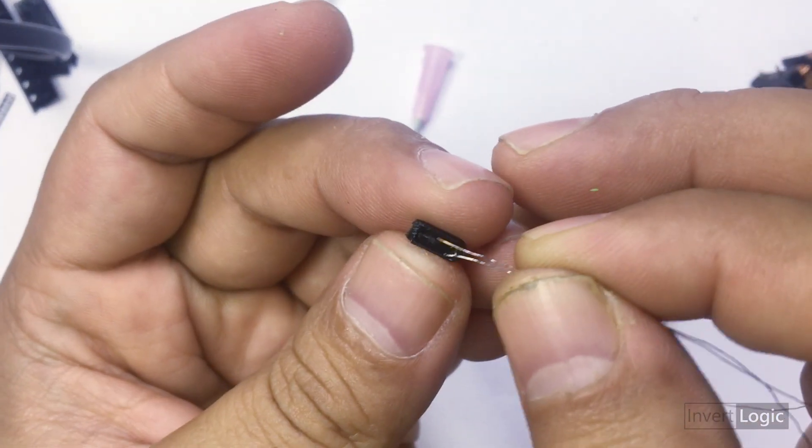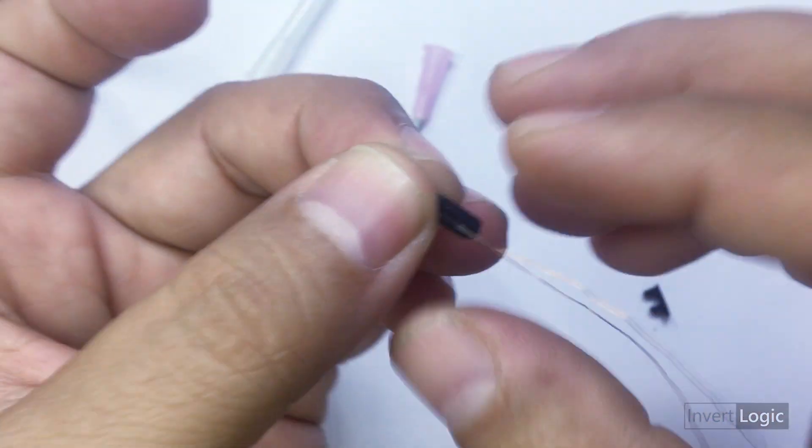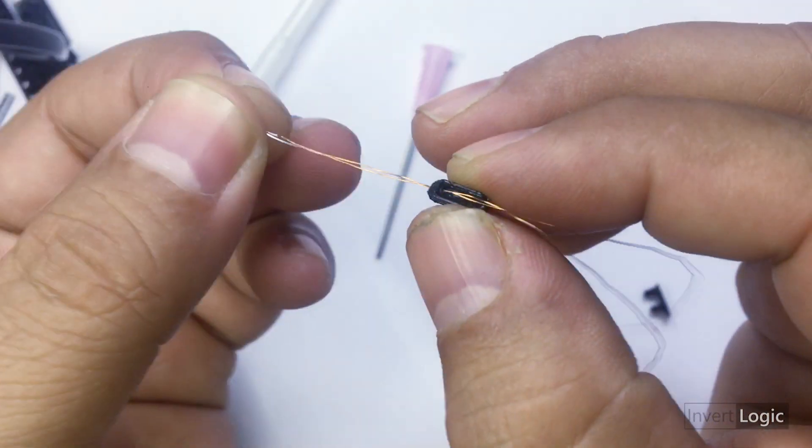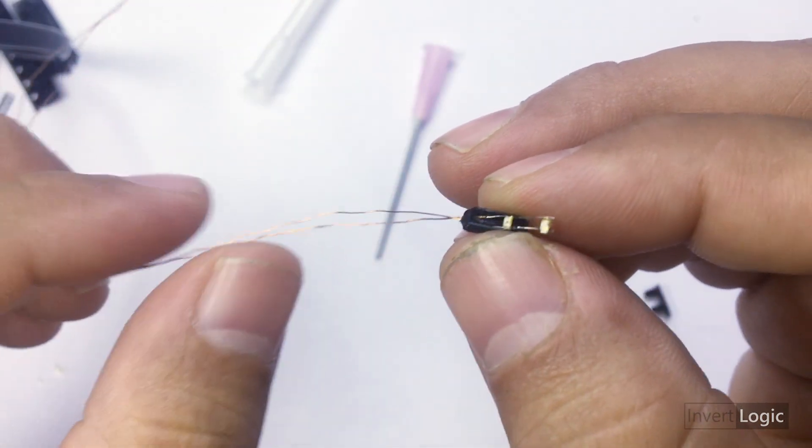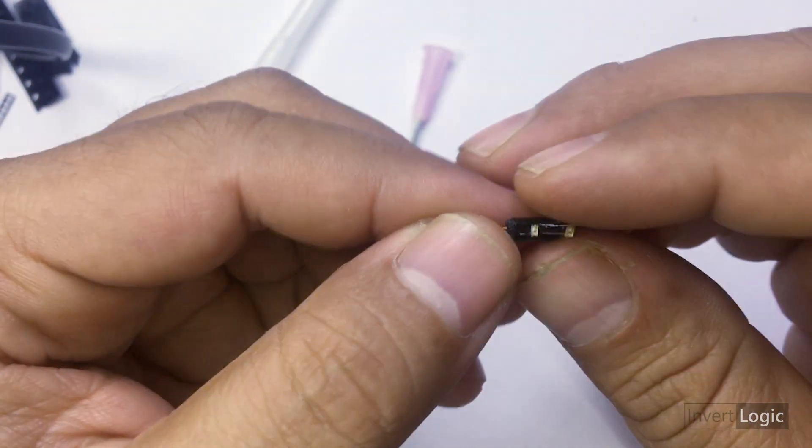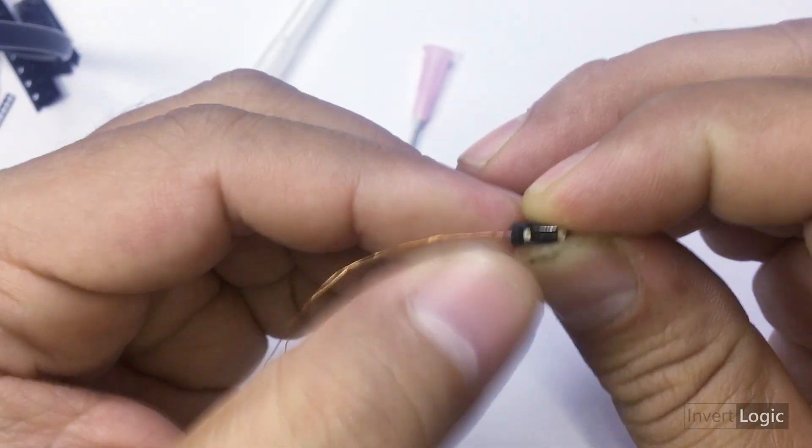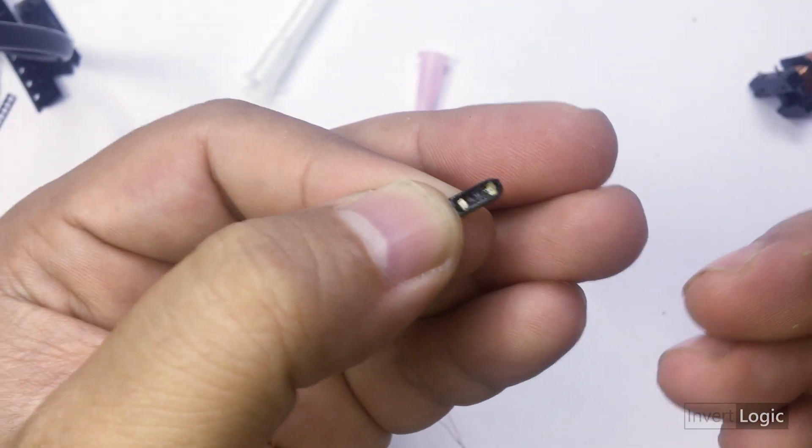Now, once the soldering is done, we need to insert the wires from the back cover of the signal and flush the LEDs inside the gap there.